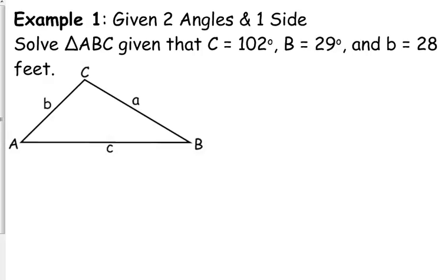Alright, so first scenario. If we are given two angles and one side, we are going to solve this triangle ABC. And we are told that angle C is 102 degrees, angle B is 29 degrees, and side b is 28 feet. Angle C is 102 degrees, angle B is 29 degrees, and side b is 28 feet.